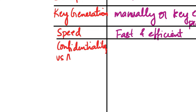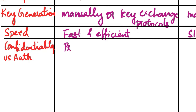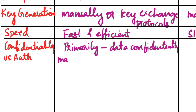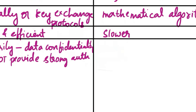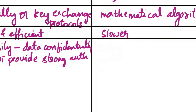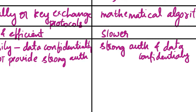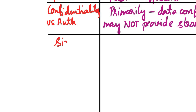The next aspect is confidentiality versus authentication. Symmetric cryptography is primarily used for data confidentiality and may not provide strong authentication. Asymmetric cryptography offers both strong authentication and data confidentiality.